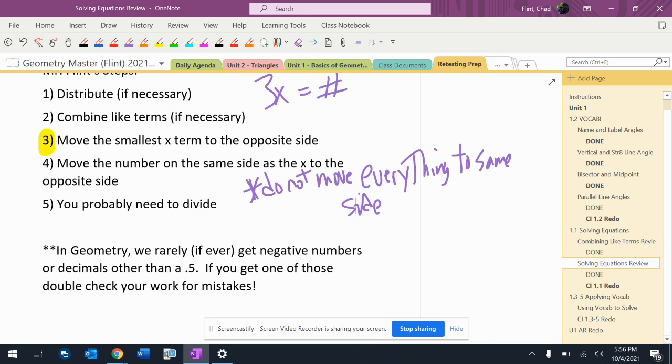The last thing you should do is divide. And then above all, when you're doing geometry equations, we rarely if ever get a negative. And we rarely if ever get any decimals other than something 0.5.